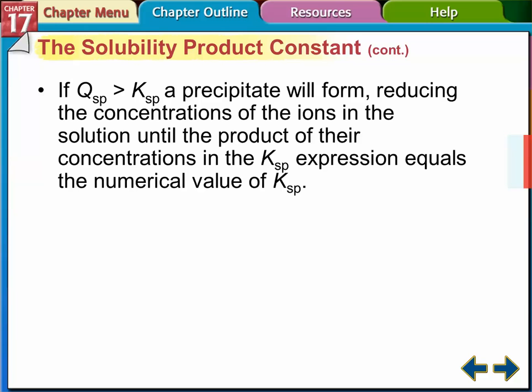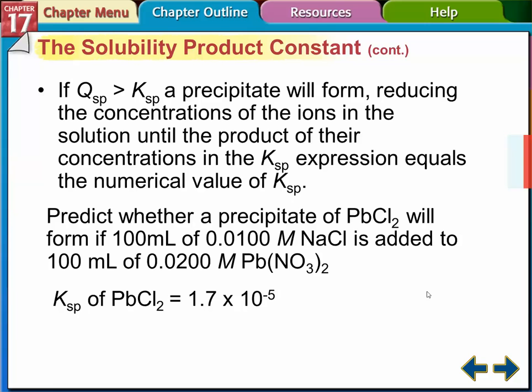They'll combine, the ions won't be able to dissolve, so they'll go back and form the original product, and that will precipitate out of the solution. So for problems like this, predict whether a precipitate of lead chromate—I mean, lead chloride—will form if 100 milliliters of 0.0100 M NaCl is added to 100 milliliters of 0.0200 M Pb(NO3)2.